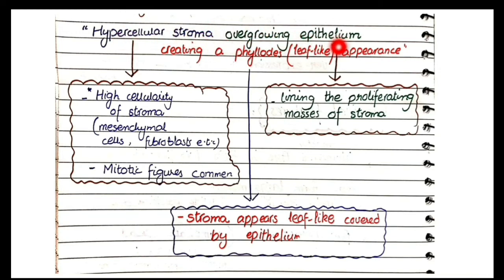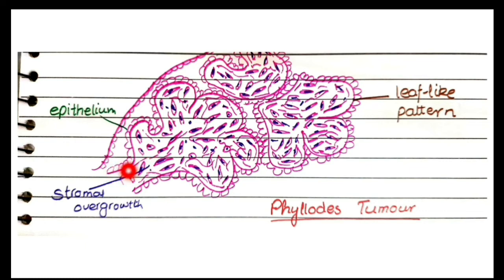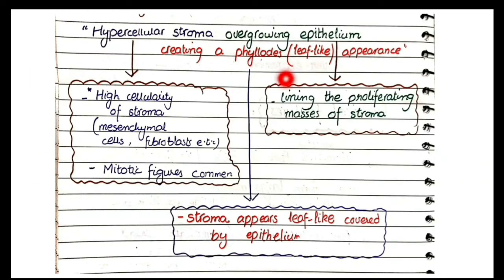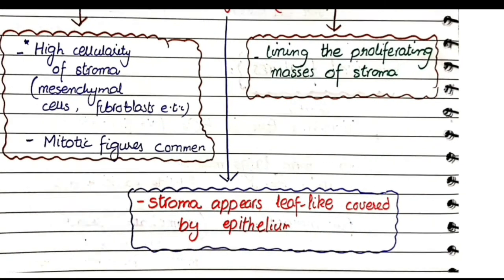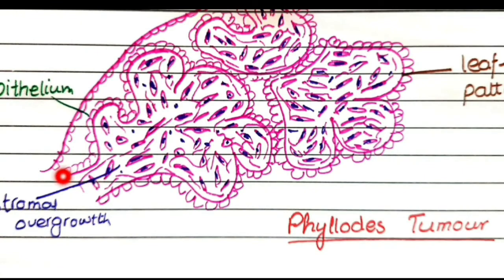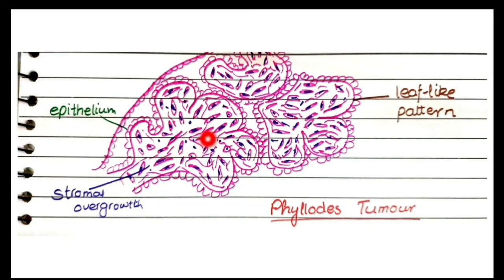Since phyllodes tumors are also biphasic, epithelial components are growing, but the hypercellular stroma grows at a much faster pace. You will see epithelium lining the proliferating masses of stroma. The word 'phyllodes' means leaf-like, and this overall architecture creates a phyllodes appearance — the stroma appears as leaf-like projections covered by epithelium. This is the typical picture: stromal overgrowth with extreme cellularity in a leaf-like pattern lined by epithelium.